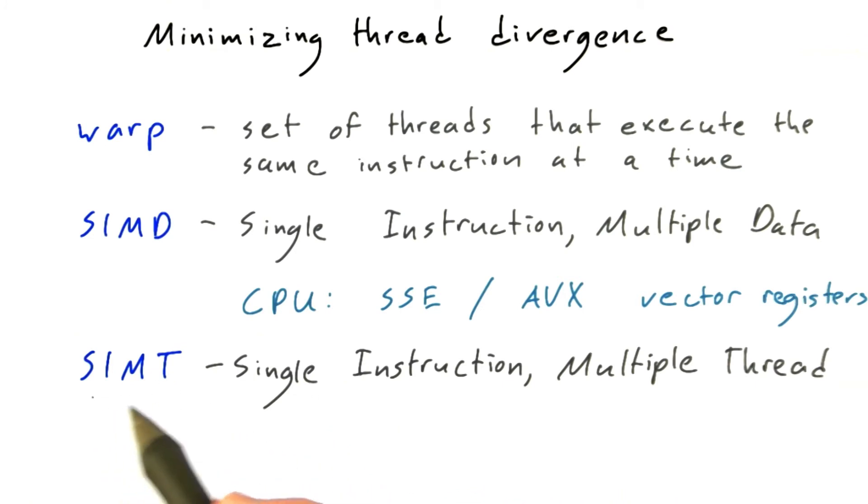Another term you'll see a lot is SIMT. This is a term coined by NVIDIA to stand for Single Instruction Multiple Threads, and this is a subtle distinction that has to do with what happens when there is thread divergence. Let me explain what that means.